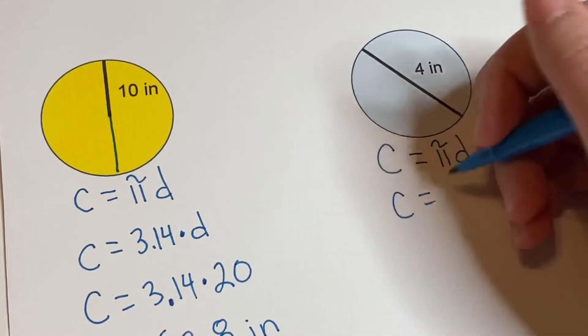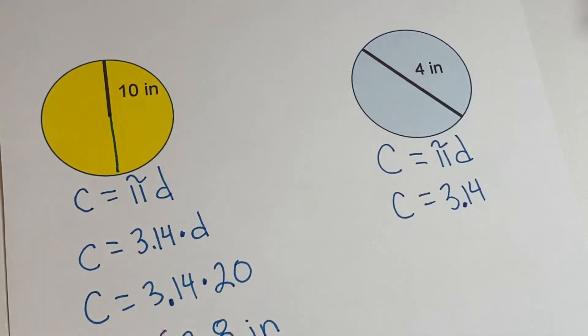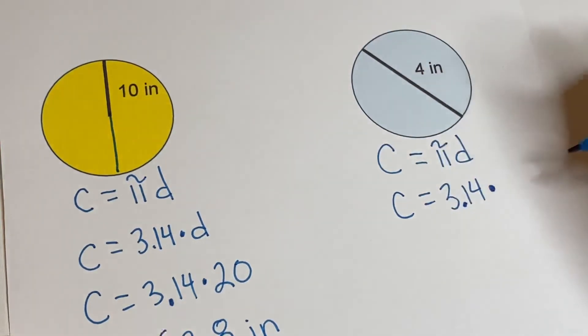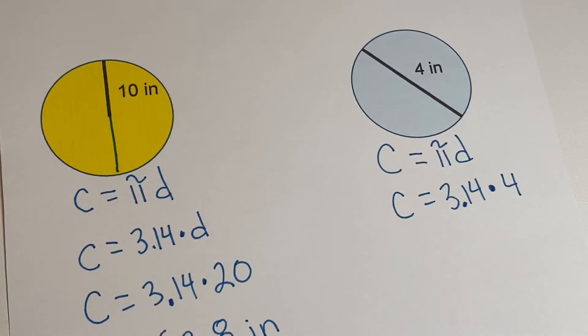Circumference is equal to 3.14, which is what pi is equal to, and we're going to times that by the diameter, which in this case is 4. Then we just get out our handy dandy calculator and we times that by 4.